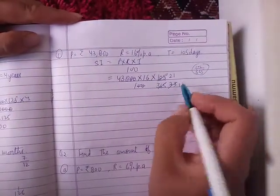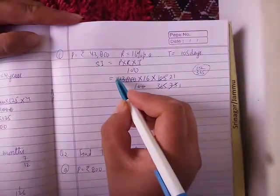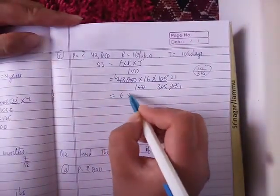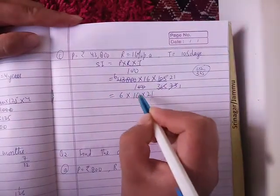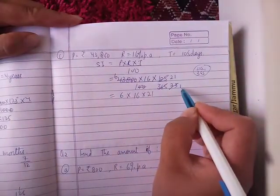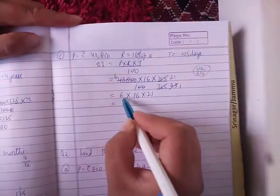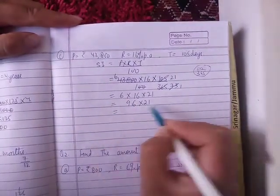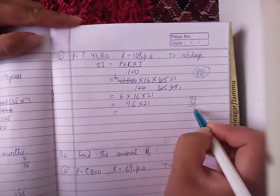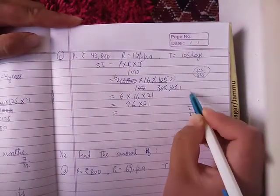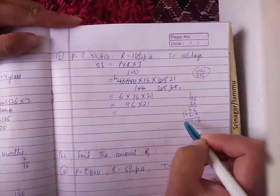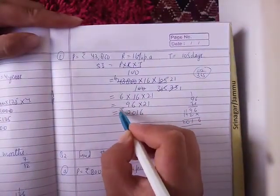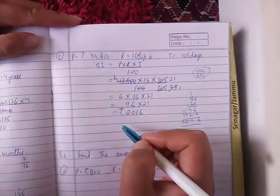That's 73 into 6 into 16 into 21. Six times 16 is 96 into 21. Two times 6 is 12. Nine into one is 9. Nineteen, six nine ten eleven. The answer is 2016.